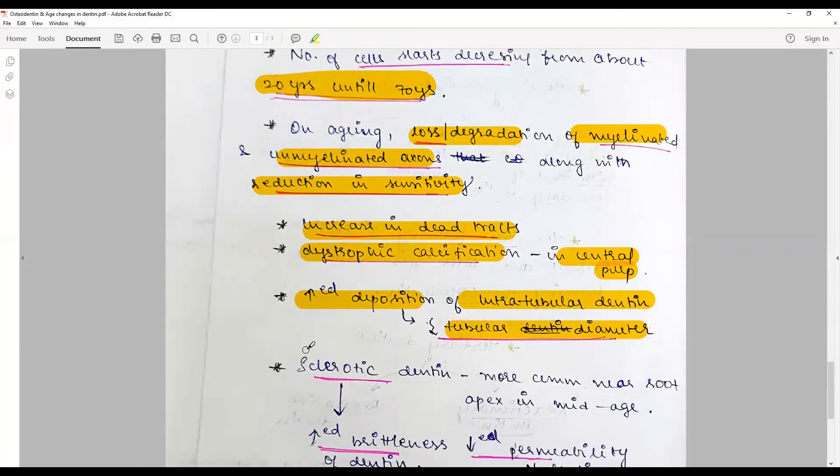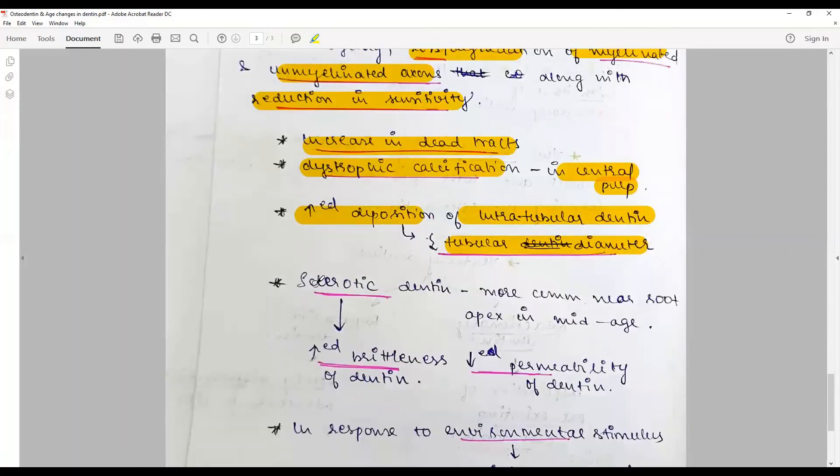When there is noxious stimuli, there is formation of sclerotic dentine, which is more common among the root and the apex, progressively starting from middle age. This sclerotic dentine or calcification of the dentinal tubules occurs in response to noxious stimuli and death of odontoblastic process.